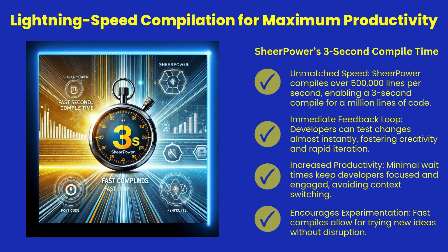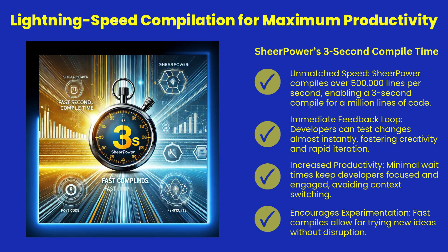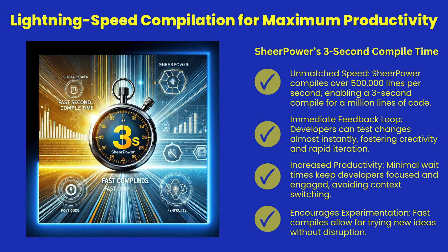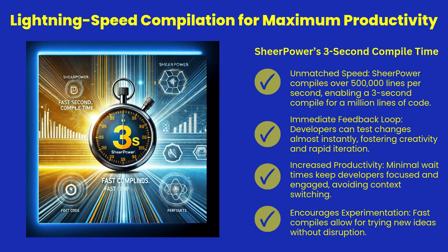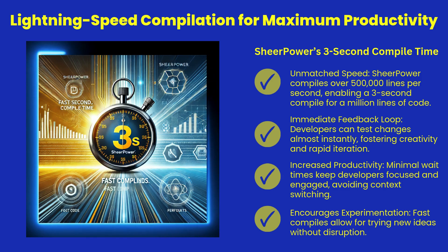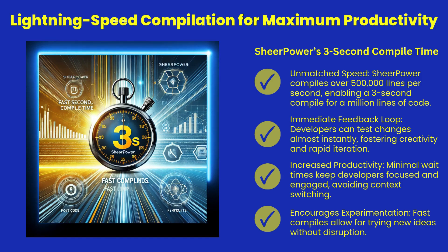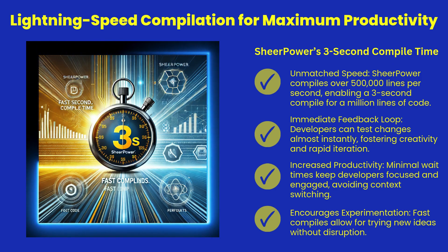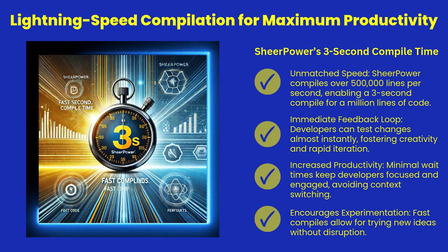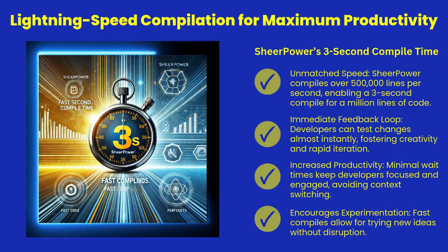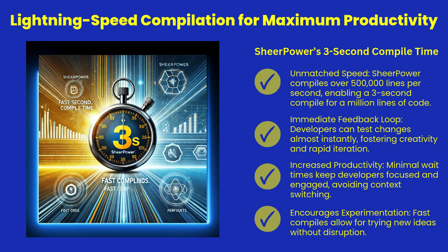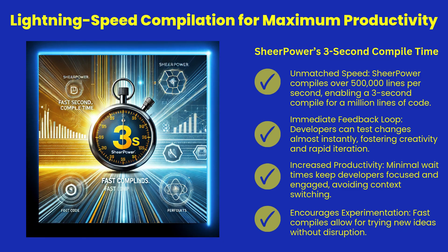ShearPower's 3-second compile time — where speed meets productivity. Imagine compiling over a million lines of code in just 3 seconds: unmatched speed, thanks to ShearPower's ability to process more than 500,000 lines per second. This ultra-fast compilation creates an immediate feedback loop, allowing developers to test changes instantly. No more waiting, just pure creativity and rapid iteration. With minimal delays, developers remain focused and engaged, avoiding those costly context switches that can derail productivity. And because you're not waiting around, experimentation is encouraged — you can try out new ideas without hesitation or frustration.